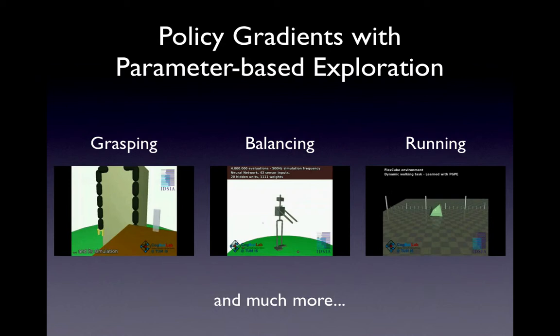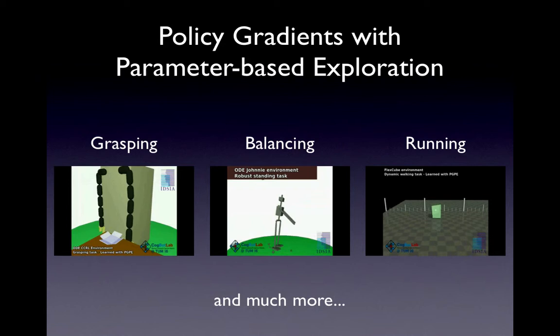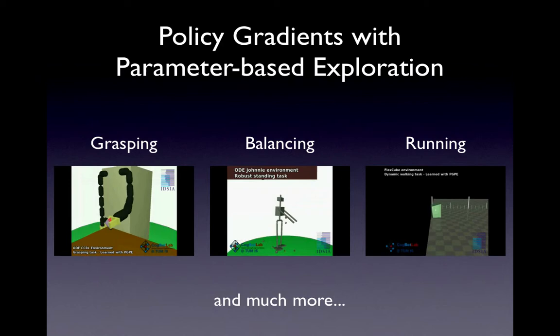The last example shows a mass-spring system in the form of a cube that learns to walk dynamically stable. All of these tasks and much more were not only learned successfully with PGPE but also faster and more reliably than the standard policy gradient methods.